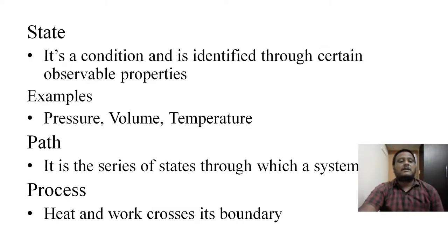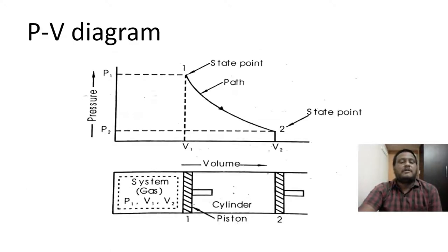Again, with the help of PV diagram only, we can define process. A system is said to undergo a process when heat and work cross the boundary of the system.